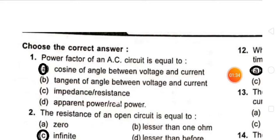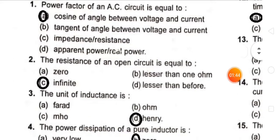Next question: the resistance of an open circuit is equal to what? In an open circuit, there is no flow of electrons, so the opposition to current flow is infinite. The resistance of an open circuit is equal to infinity.